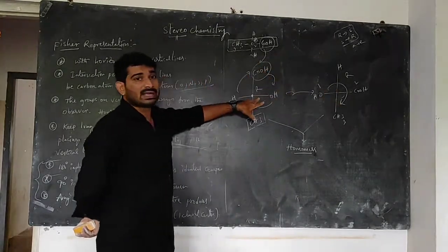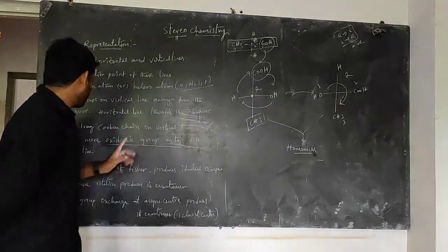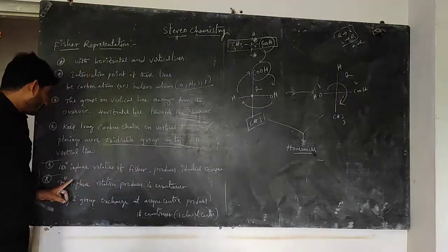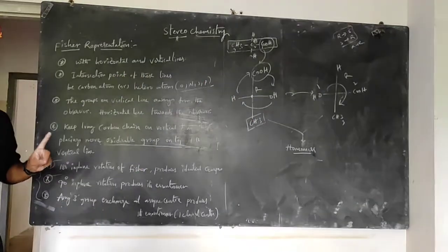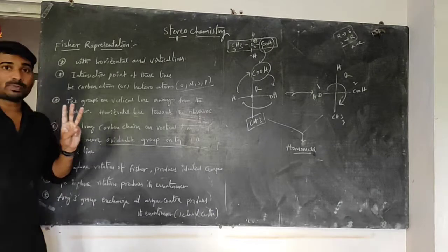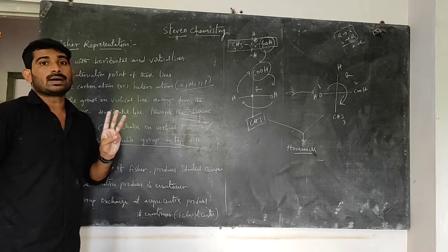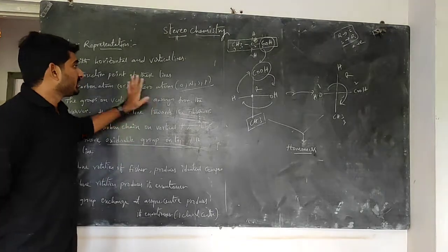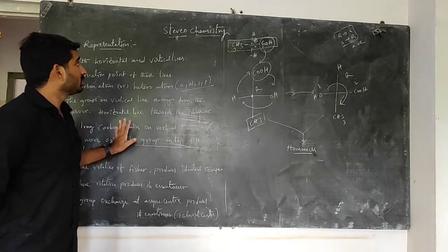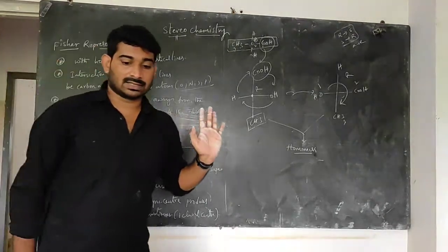Important summary: in Fischer projection, a two-group exchange at a chiral center gives an enantiomer, while a three-group exchange gives a homomer — an identical compound with the same configuration. This completes the discussion of Fischer projection rules.